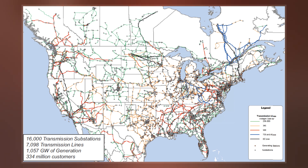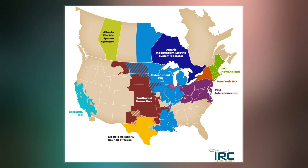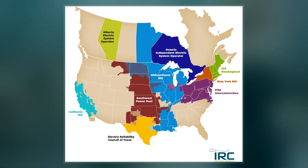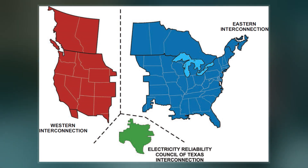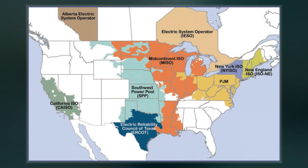National standards allow a range of 114 V to 126 V. Historically, 110 V, 115 V, and 117 V have been used at different times and places in North America. Mains power is sometimes spoken of as 110 V; however, 120 V is the nominal voltage.